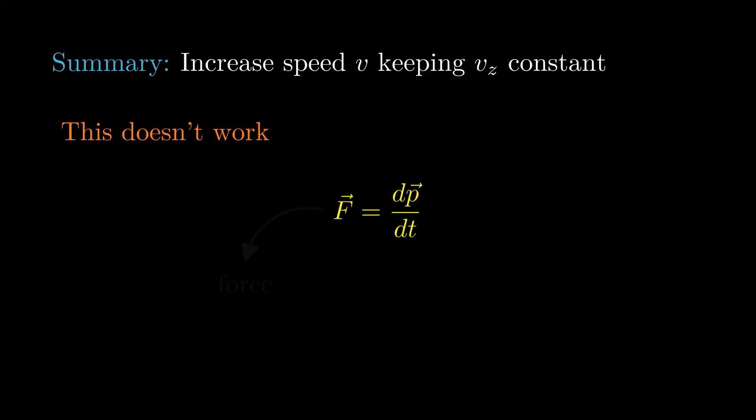Let me summarize. Burns proposes to increase the ion speed V while keeping the Z component of velocity constant. But if you actually look at the equations, it doesn't work.